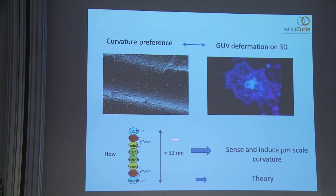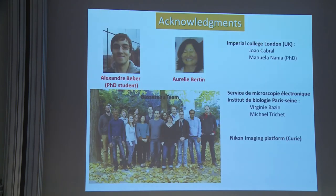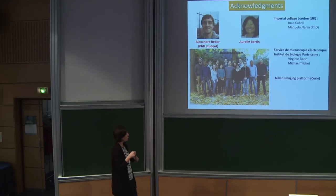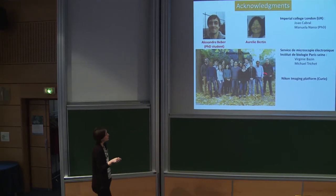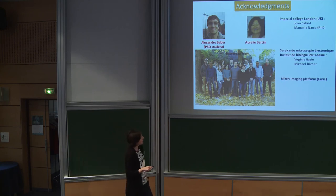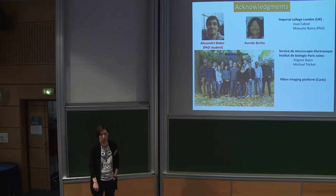As a conclusion: septins have a curvature preference with the wavy substrate, which is probably related to the deformation of the GUVs I showed earlier — exactly in the same range. The question is how something 32 nanometers in size can sense and induce micrometer-scale curvature — we have a theory for that but don't have time now. In summary, septins can deform membranes, affect mechanical properties of the membrane, and sense micrometer-scale curvature. I would like to thank Alexander, the PhD student who performed this work, co-supervised by Aurélie Bertin and me, collaborators João Cabral and Manuela Nannini who made the wrinkled surfaces, and the Nikon Center for fluorescence microscopy.